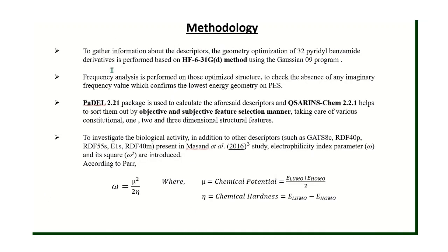To get descriptor information for the 32 benzimidazole derivatives, we used the B3LYP/6-31G(d) method using Gaussian 09 software. To confirm optimized structures, frequency analysis was performed and we checked for the absence of any imaginary frequency values, which confirms the lowest energy geometry on the potential energy surface (PES). Then PADEL 2.1 package was used to calculate the descriptors, and Schem 2.2.1 was used to sort them by objective and subjective feature selection.